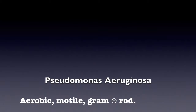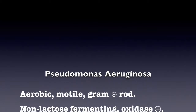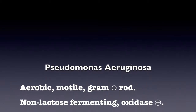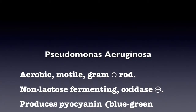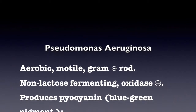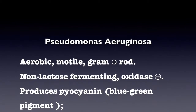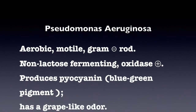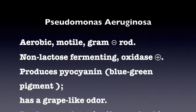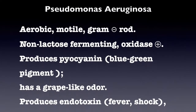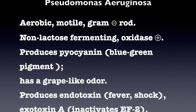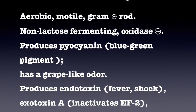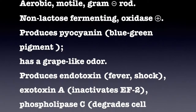Pseudomonas aeruginosa is aerobic, motile, gram-negative rod, non-lactose fermenting, and oxidase positive. It produces pyocyanin, a blue-green pigment, and has a grape-like odor.